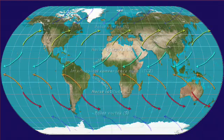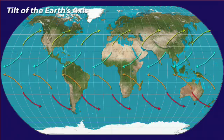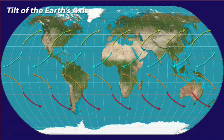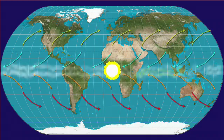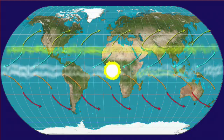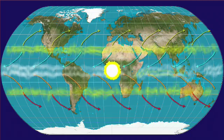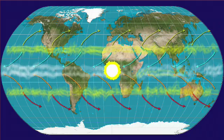The tilt of the earth's axis with respect to its orbital plane complicates things further. This is an idealized situation with the sun situated over the equator, which places the rainy weather associated with the ITCZ right over the equator, and the dry conditions associated with the horse latitudes distributed symmetrically north and south of the equator.